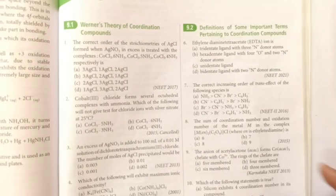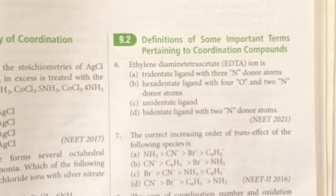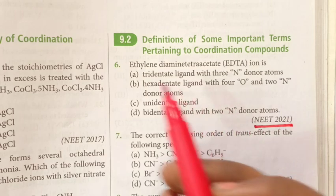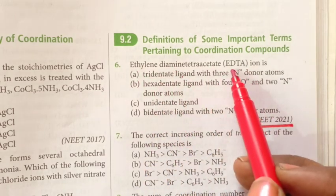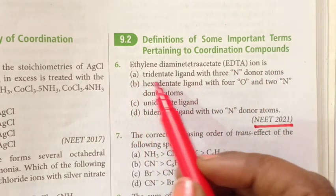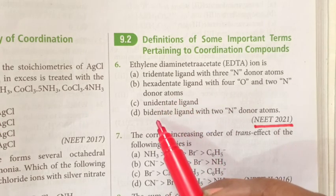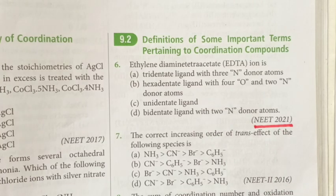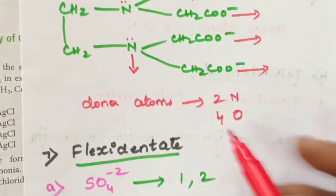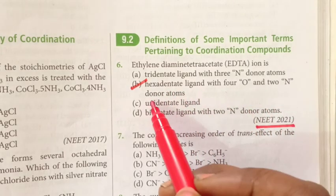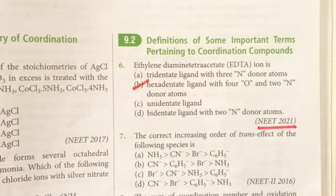Now let us see a question from the 2021 NEET exam. Ethylene diamine tetra acetate, that is EDTA ion — four options are given: tridentate ligand with three nitrogen donor atoms; hexadentate ligand with four oxygen and two nitrogen donor atoms; unidentate ligand; bidentate ligand with two nitrogen donor atoms. Just now we saw that EDTA is a hexadentate ligand with two nitrogen and four oxygen donor atoms. So the answer is option B.